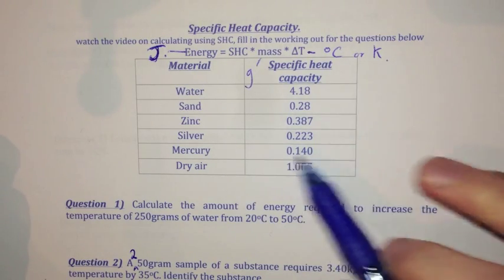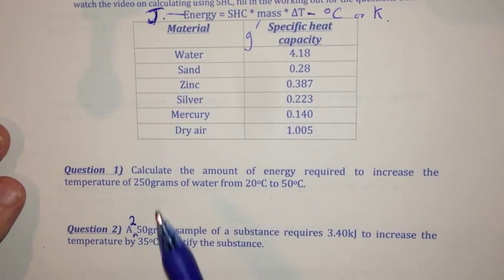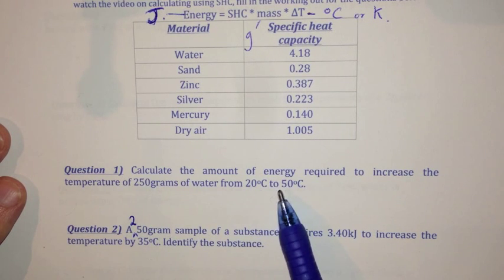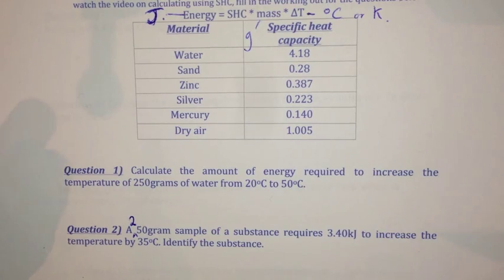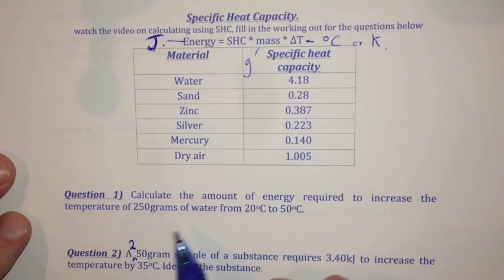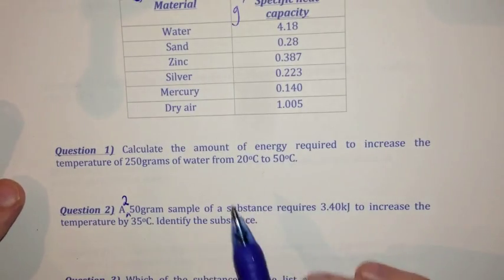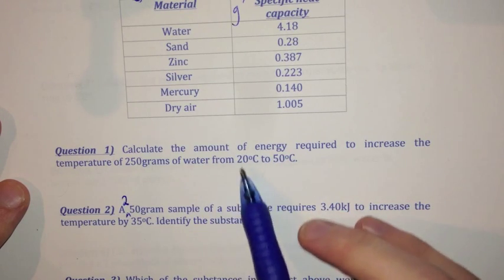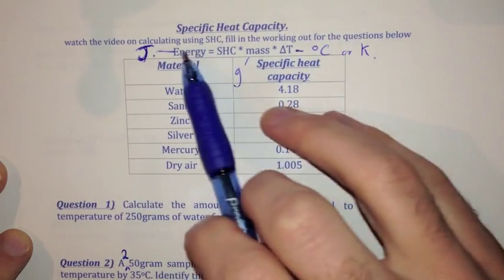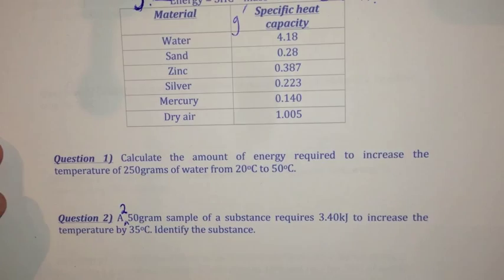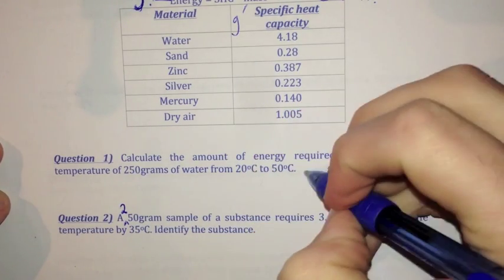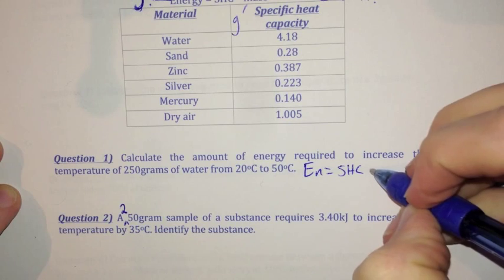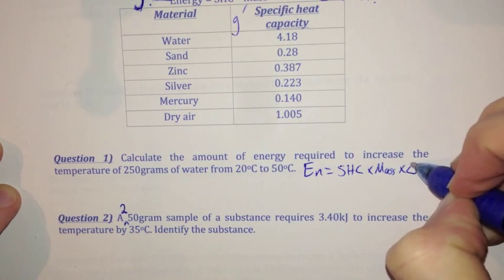We've got a list of specific heat capacities here which we're going to need to use. The first question says: calculate the amount of energy required to increase the temperature of 250 grams of water from 20 degrees to 50 degrees. When I see energy and a temperature increase, that tells me I need to use this equation. So I'm going to write it down: energy equals SHC, specific heat capacity, times mass, times delta temperature — my temperature change.